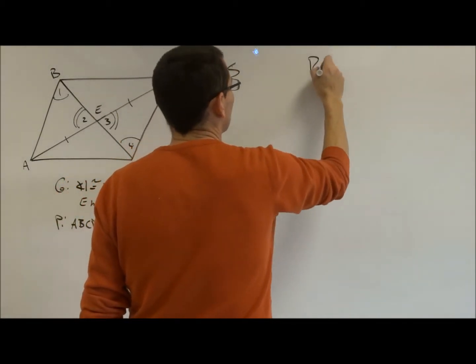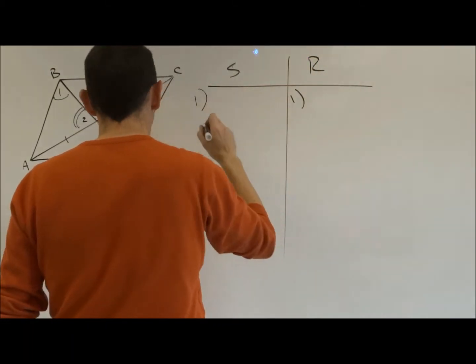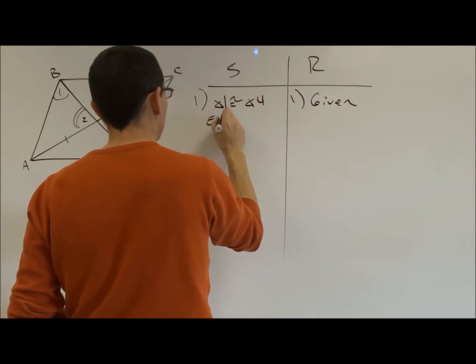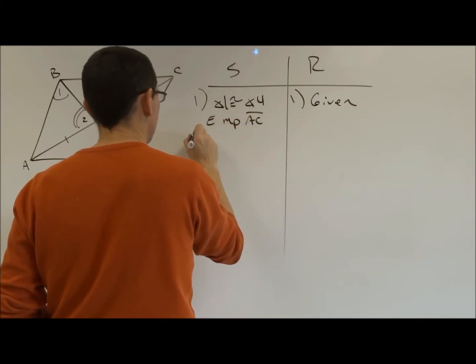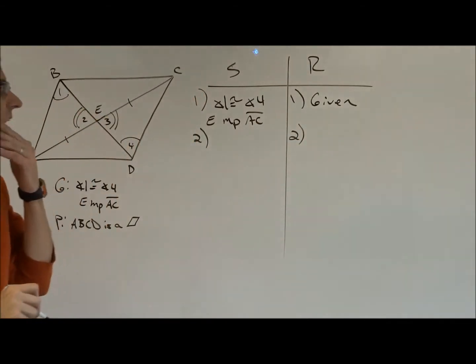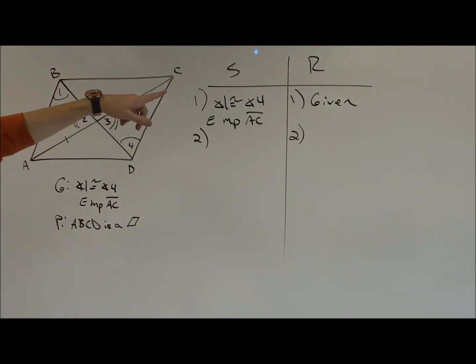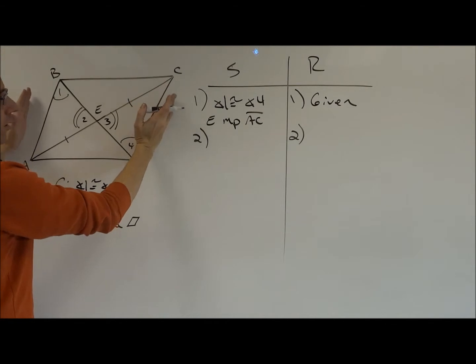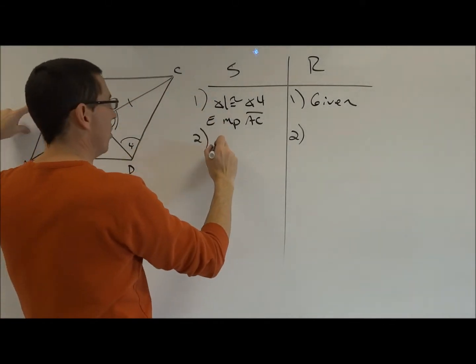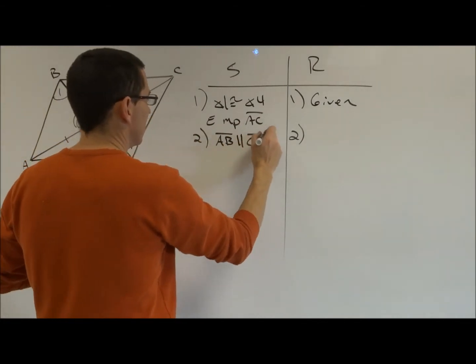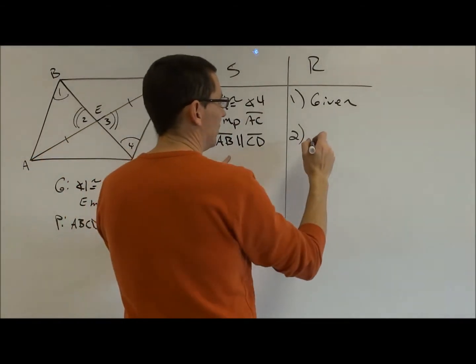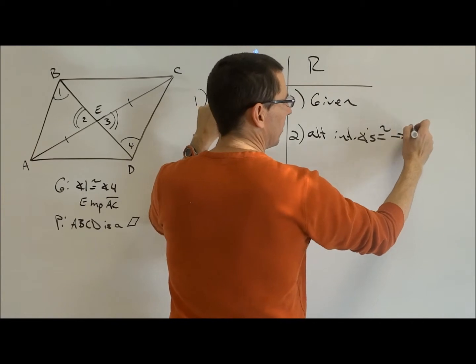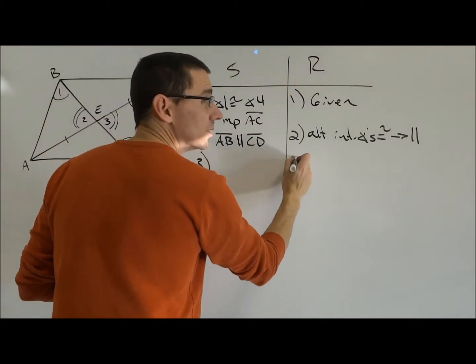So let's say statements, reasons, we're going to start off with the given. Angle one congruent to angle four. E is the midpoint of segment AC. Now, let's use the angle one congruent to angle four. I'm going to elect to do this one by proving one pair of opposite sides congruent and parallel. So I'm going to say, if one equals four, then I know that AB has to be parallel to CD. Reason for that, alternate interior angles congruent give me parallel lines. It's getting bright outside. Luckily, the snow is melting off the track as we speak, so that will make me pretty happy in practice today.